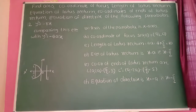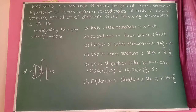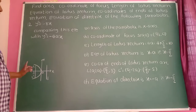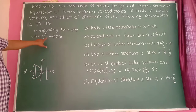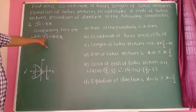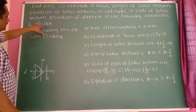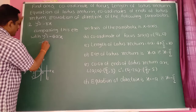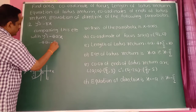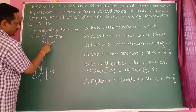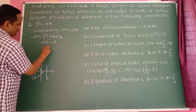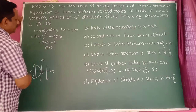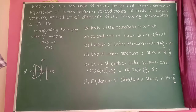Third example: y² = −8x. In this case the parabola opens to the left side. Comparing with the standard equation y² = −4ax, we get −4a = −8, so a = 2.